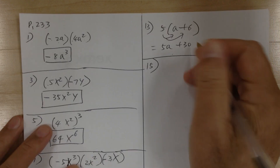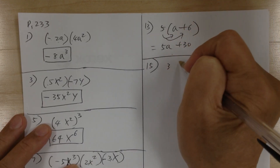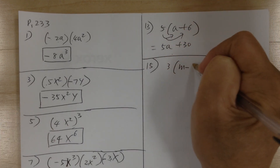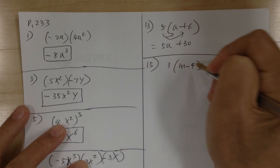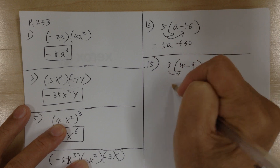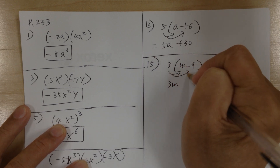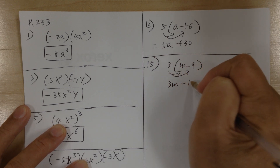Number 15. You have 3 times (m minus 4). Use the distributive property, so it would be 3m minus 12.